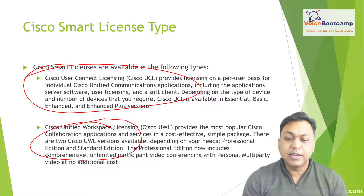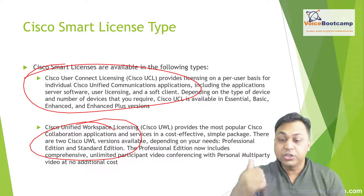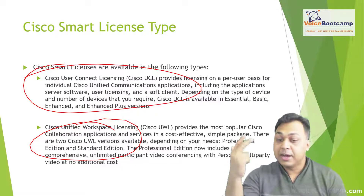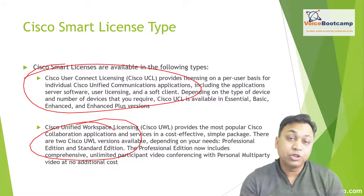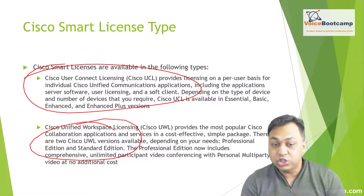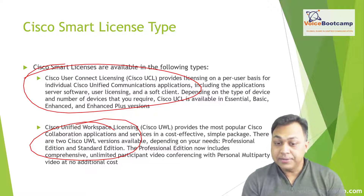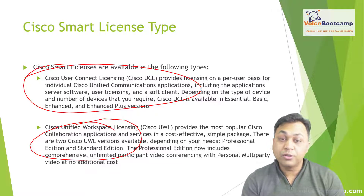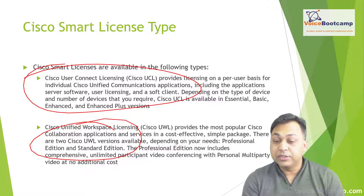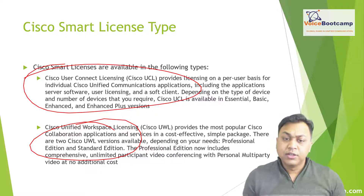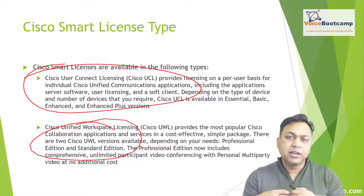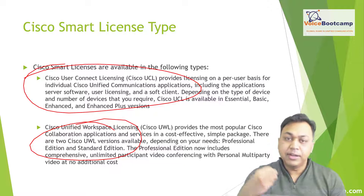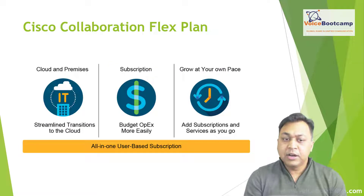The two CUWL editions are Professional and Standard. The Professional Edition includes comprehensive unlimited-participant video conferencing with personal multi-party video at no additional cost. Both licensed versions include soft clients such as Jabber or IP Communicator, application server software licensing on a per-user basis, and more. The CUWL license is easier to manage and provides a lot more services to users by applying one license.